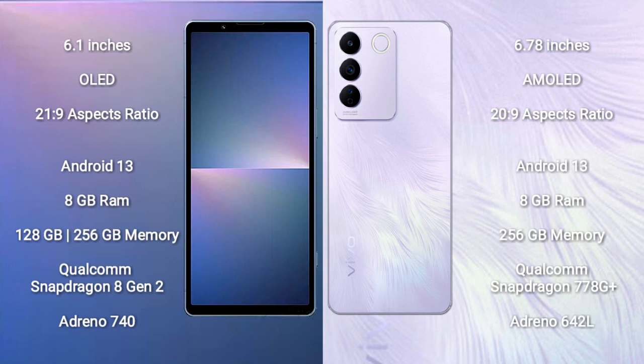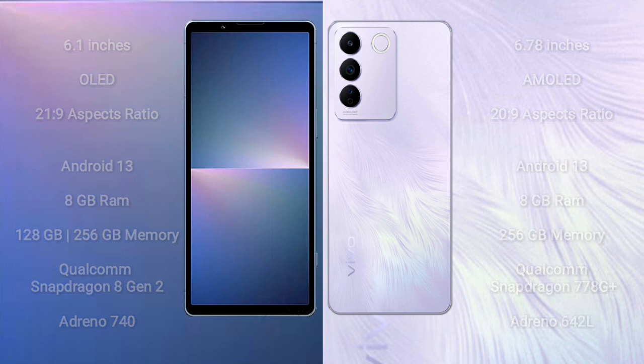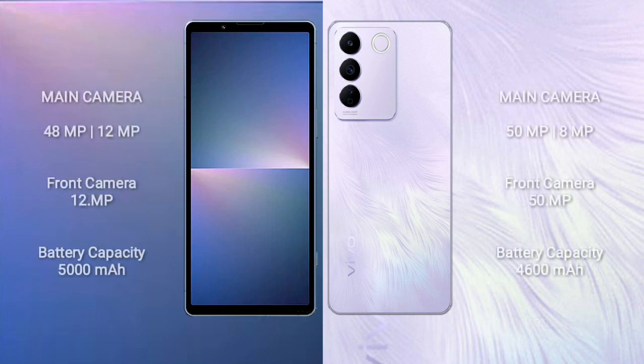VOV29 features a Qualcomm Snapdragon 778G processor and GPU Adreno 642L. Sony Xperia 5 Mark 5 has a dual rear camera setup: 48MP plus 12MP, and a front camera of 12MP. VOV29 has a triple rear camera setup: 50MP plus 8MP plus 2MP, and a front camera of 50MP.